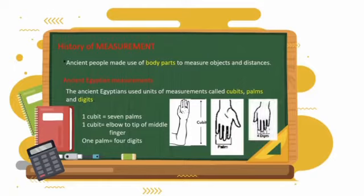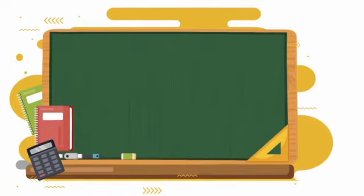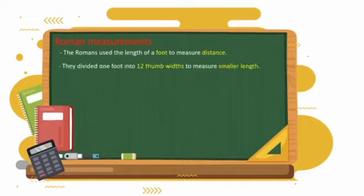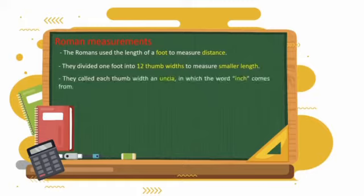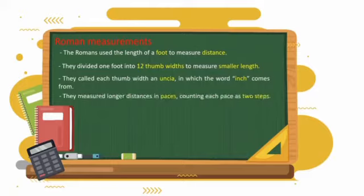However in Roman measurements, the Romans used the length of a foot to measure distance. They divided 1 foot into 12 thumb widths to measure smaller length. They called each thumb width an uncia, in which the word inch comes from. They measured longer distances in paces, counting each pace as two steps. They called 1,000 paces a mile.